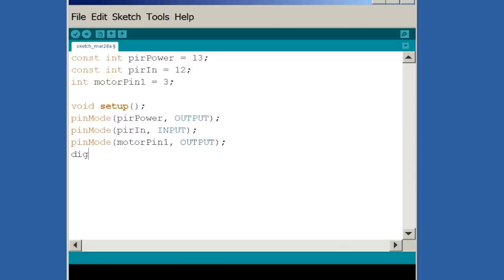In order to supply power to the motion sensor, we want to set the digital write setting to high to send it a power signal. On the converse, we want to set the motor digital write to low so that it's not getting any power at first.